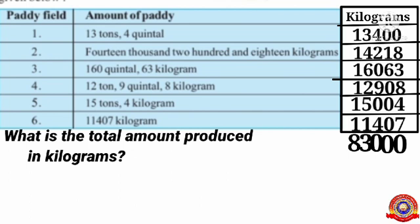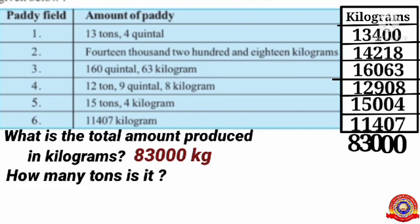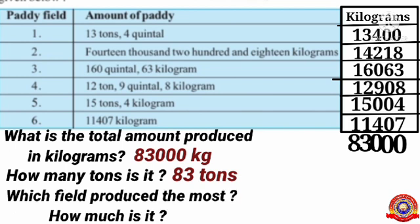Children, how many tons is 83,000 kilograms? You know that 1,000 kilograms equals 1 ton, so 83,000 kilograms equals 83 tons.